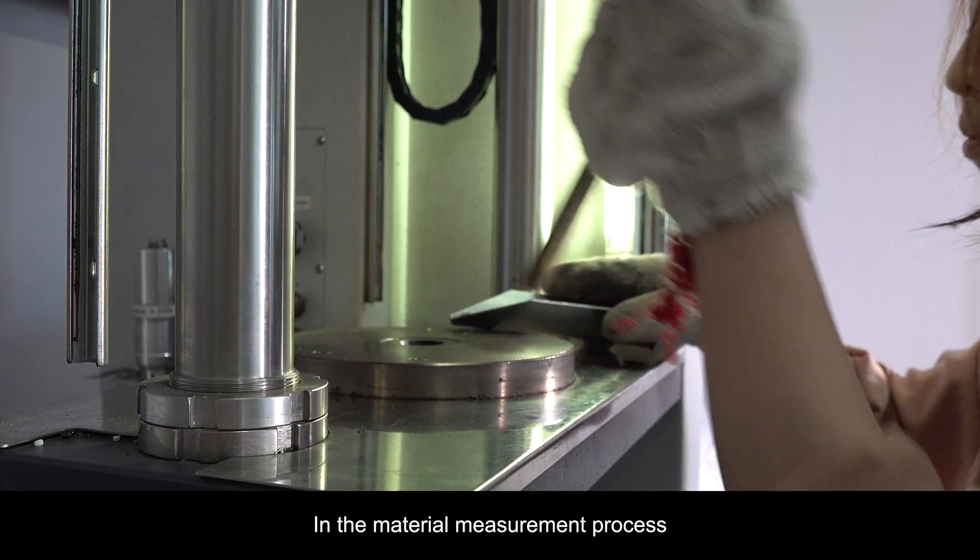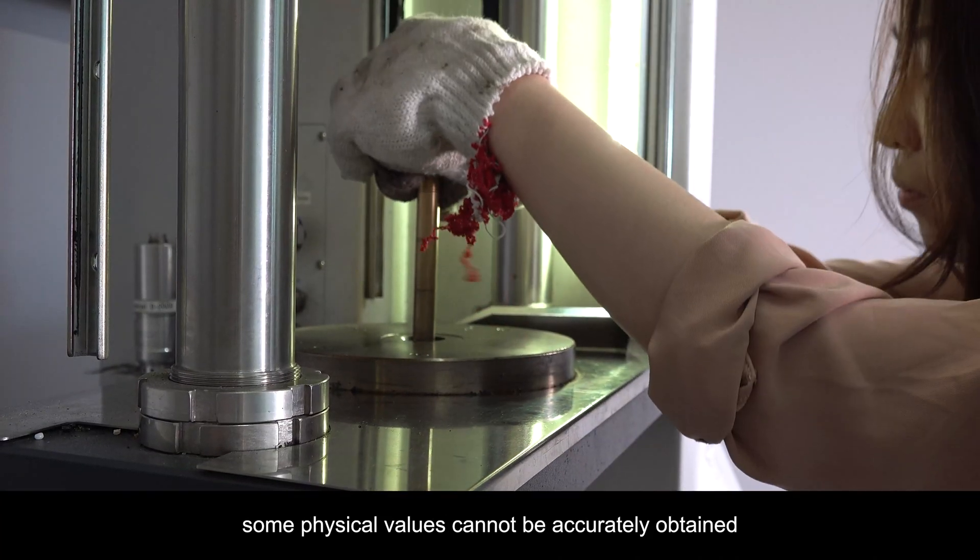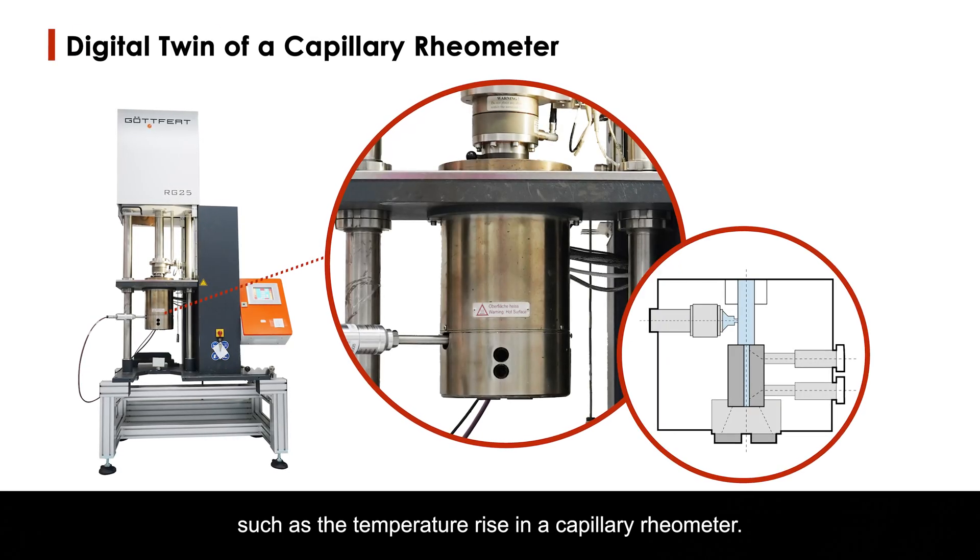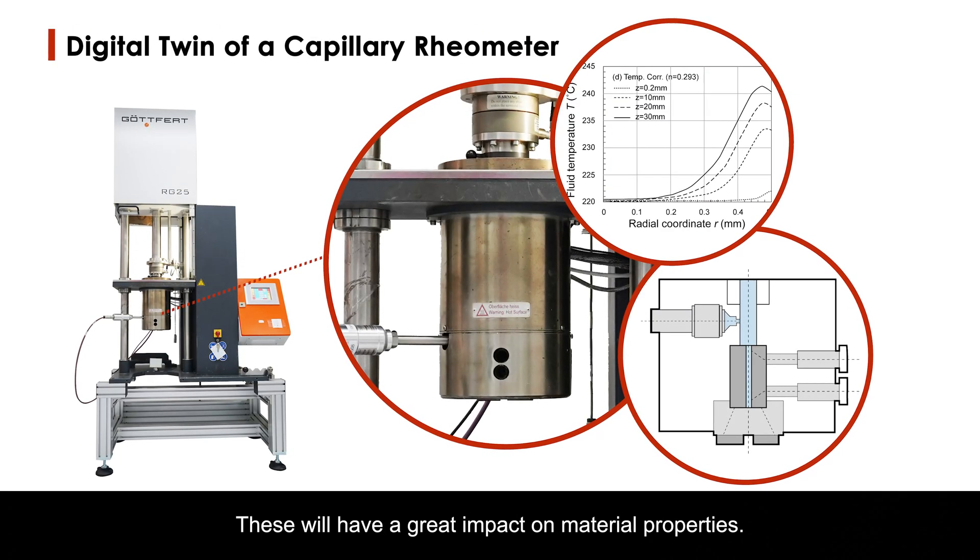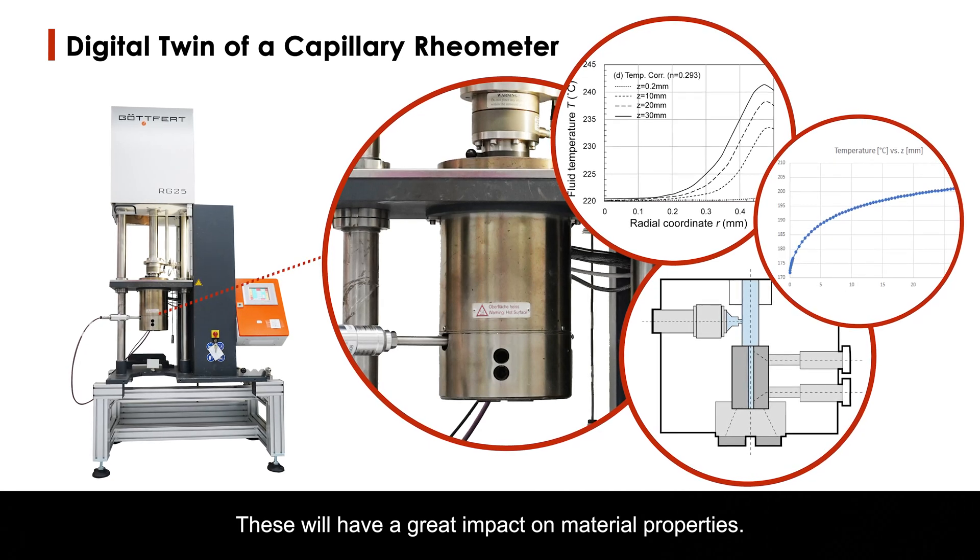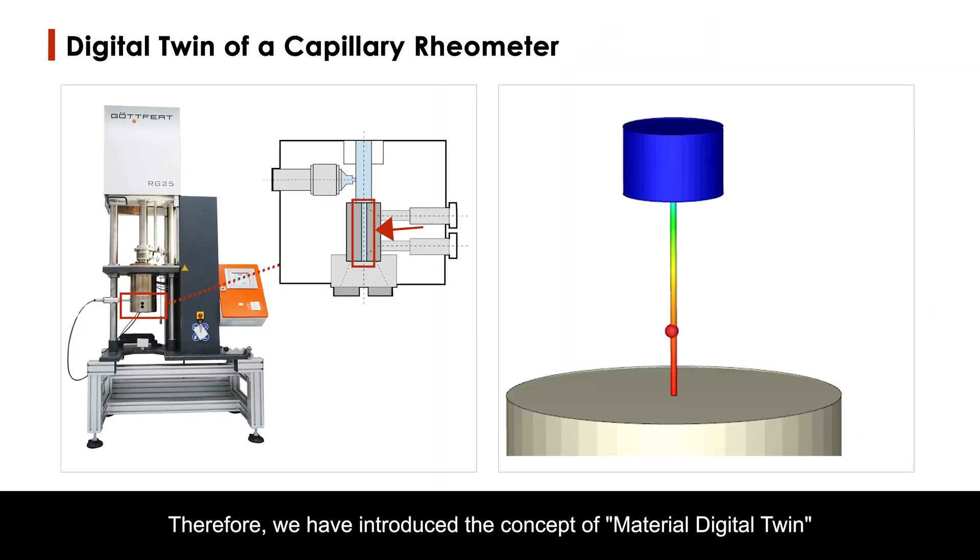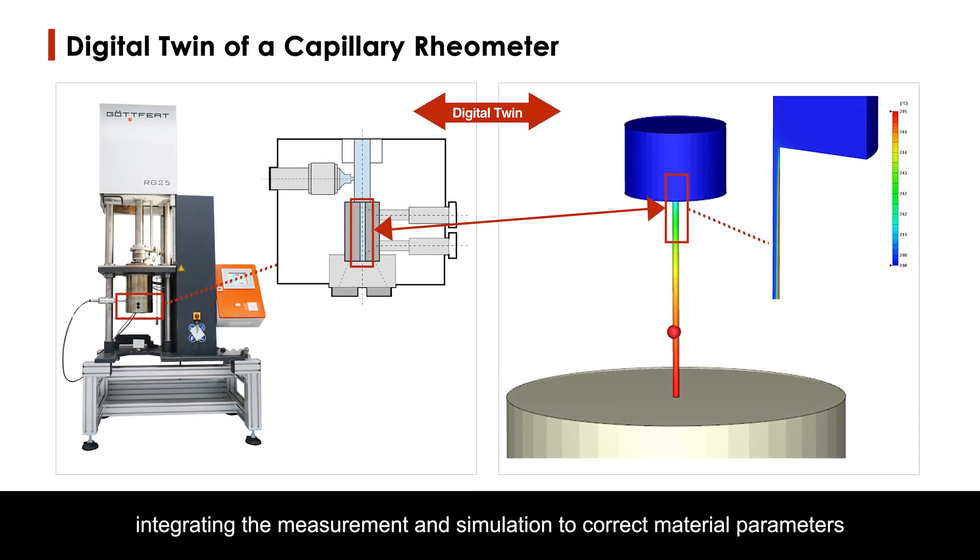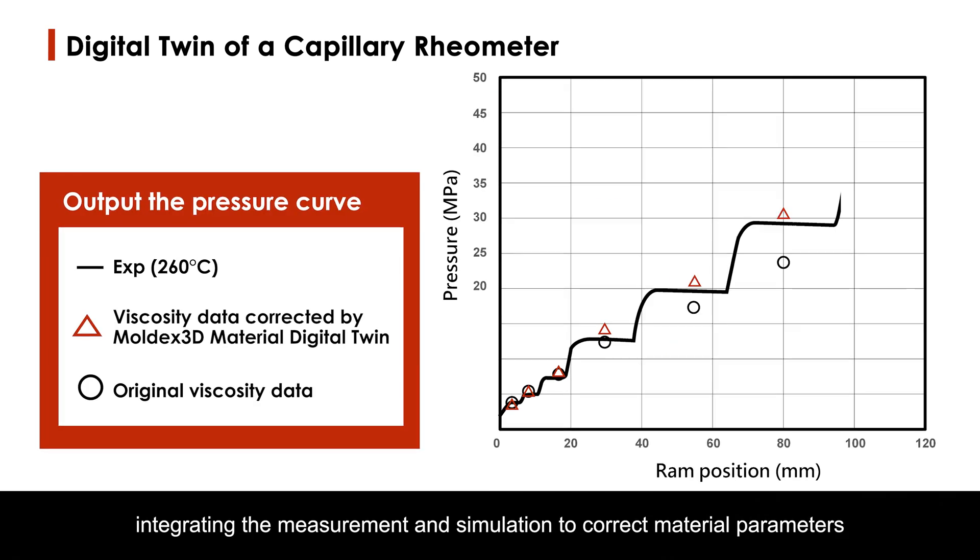In the material measurement process, some physical values cannot be accurately obtained, such as temperature rise in a capillary rheometer. These have a great impact on material properties. Therefore, we introduced the concept of material digital twin, integrating measurement and simulation to correct material parameters and